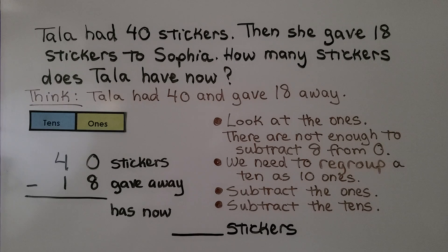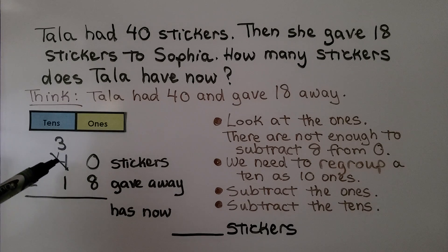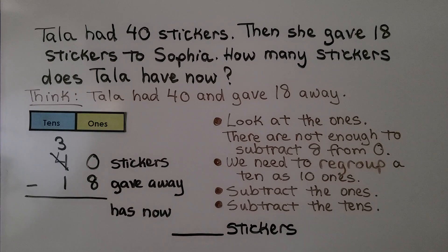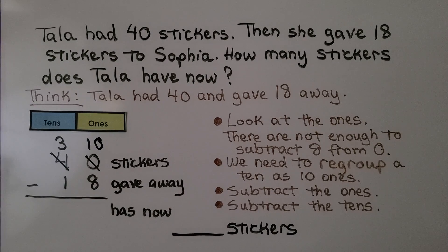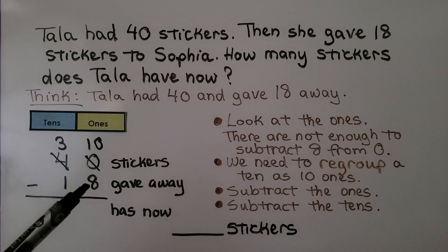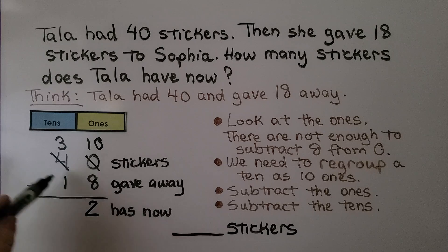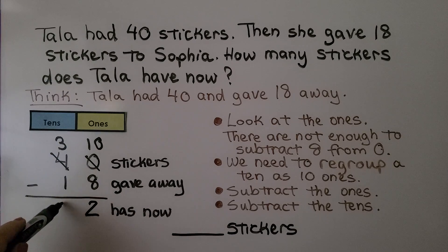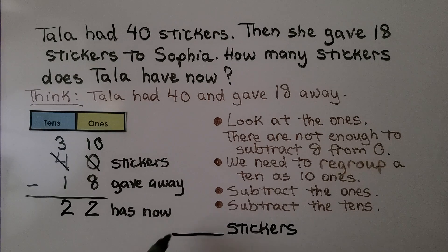So we need to regroup a 10 as 10 ones. We take a 10 from the tens place, and now instead of 4 tens, we have 3 tens. We give it to the ones place as 10 ones. Now we don't have 0 ones — we have 10 ones. And 10 minus 8 is equal to 2. And 3 tens minus 1 ten is 2 tens. That means she has 22 stickers.